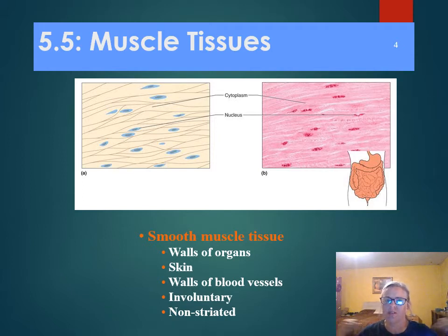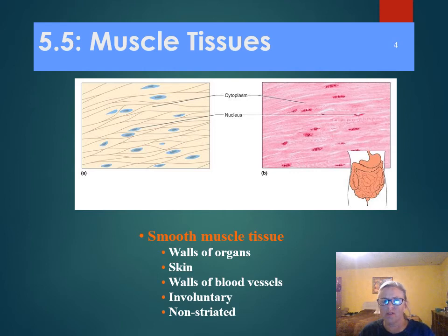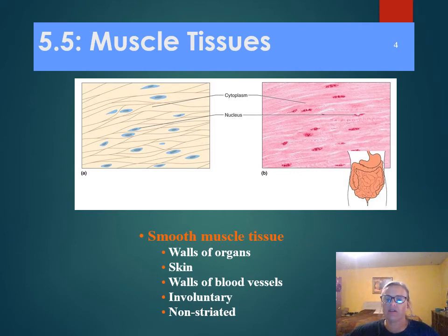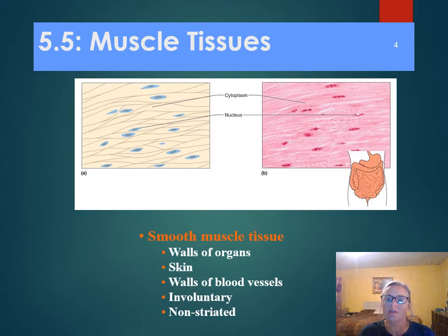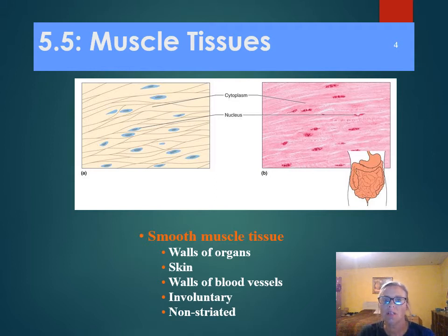Skeletal muscle cells need to be able to contract and stretch out and lengthen, and pull back in. They have those long muscle fibers that are elongated that can actually contract and pull back in. Smooth muscles have a very different function, so they're made a little bit differently. Look for those different striations to tell the difference between these two, and look to see if they're single nucleate or multi-nucleate — do they have a single nucleus per cell or many?